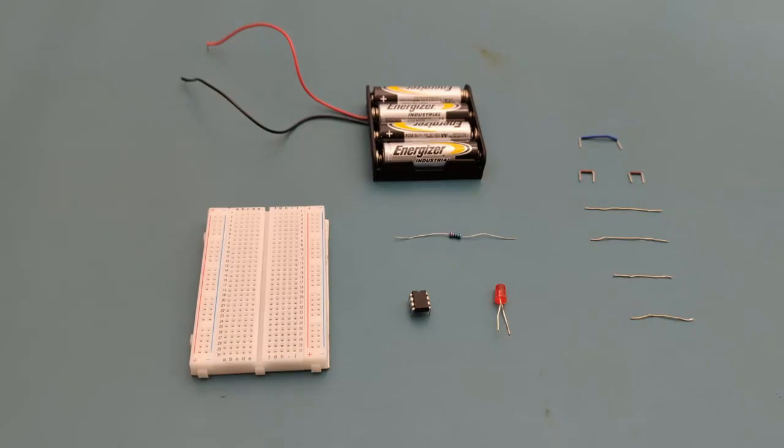Here are all the components you need to set up this circuit. Seven jumper wires. I've removed the plastic covers from four jumper wires since they'll be used as touch probes.